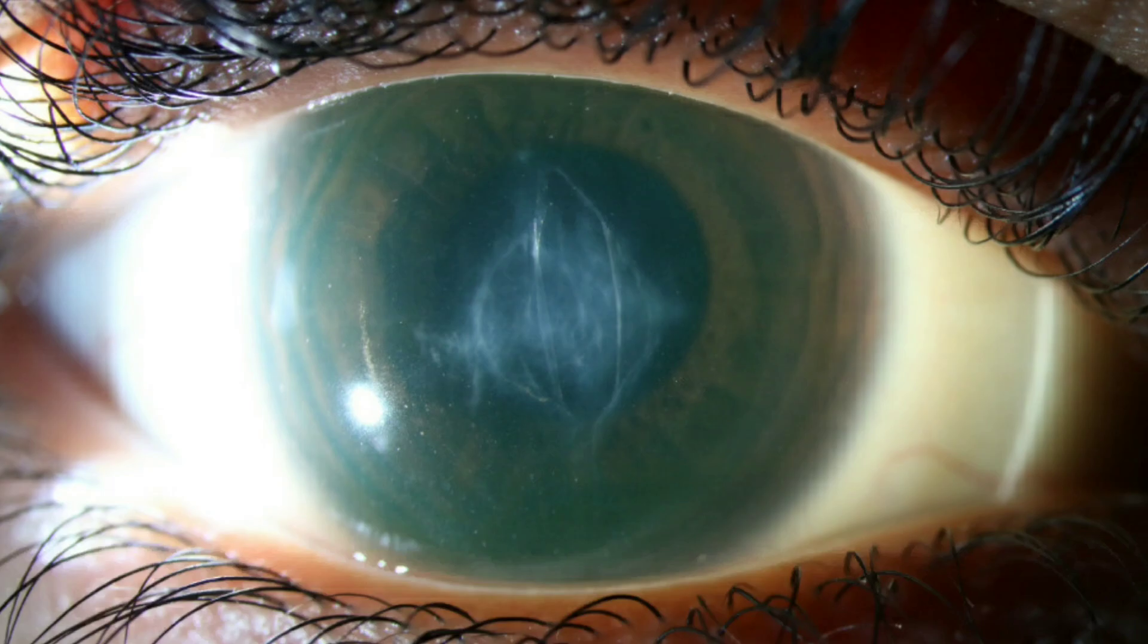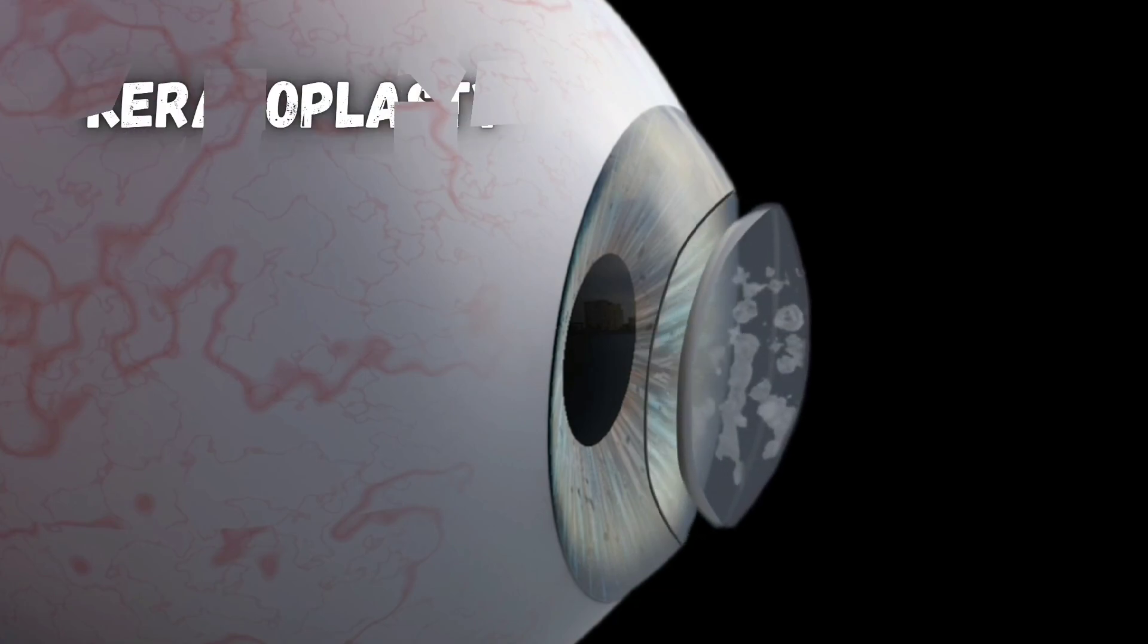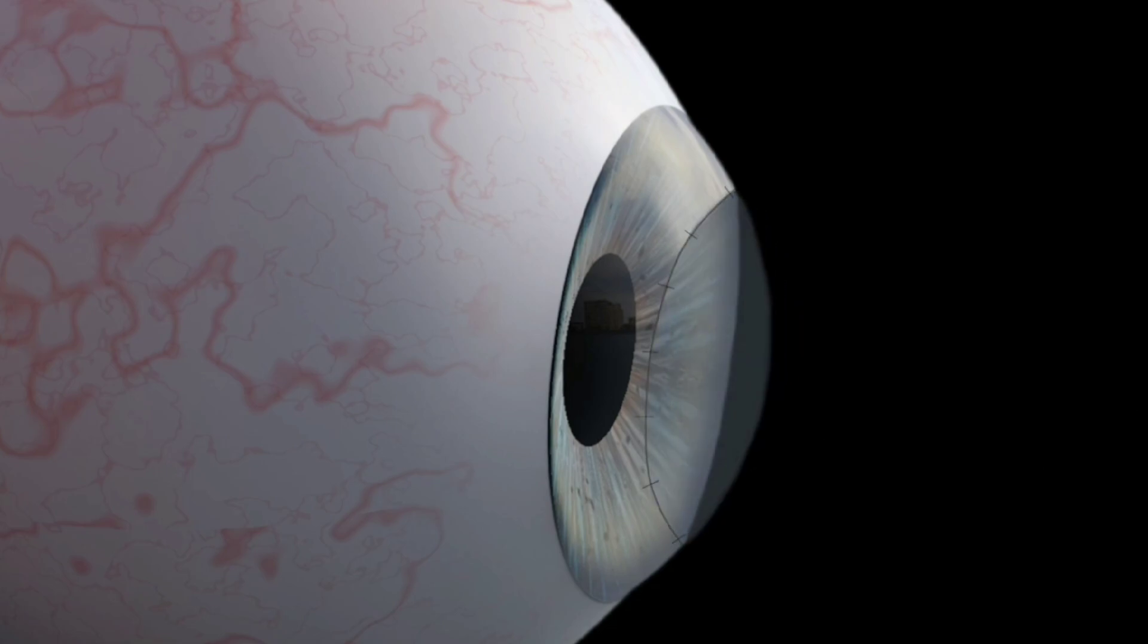Really advanced Keratoconus can cause scars on your cornea, which makes your vision even worse and usually requires cornea transplant surgery, or keratoplasty, to fix it. All or part of your cornea may be replaced with healthy donor tissue.